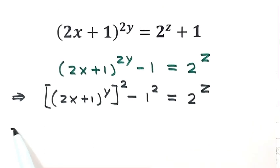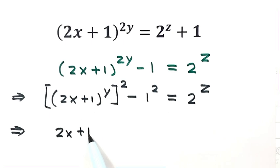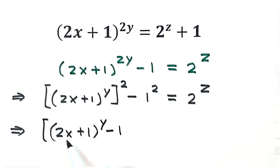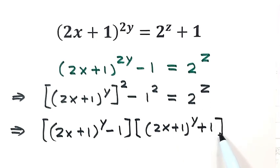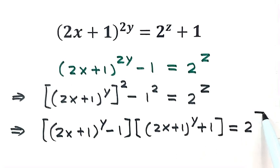Let's factor the left-hand side: [(2x + 1)^y − 1] × [(2x + 1)^y + 1] = 2^z.